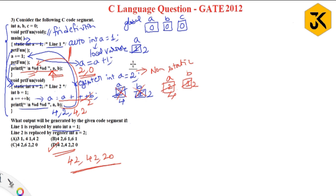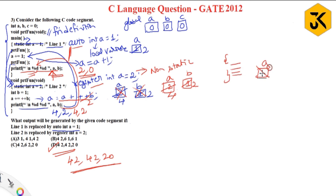Observe: for auto or register variables, the memory location is erased once the entire block is completed. In the main function block, the block didn't complete before the print statement, so the local a value of 2 was retained. However, the register int a = 2 inside print function — that entire block completed each time, so its memory was cleared on exit. I hope you understood clearly, thank you.